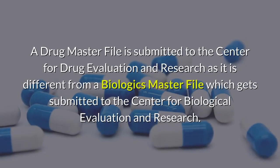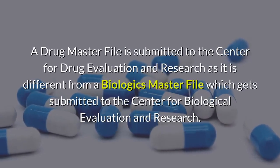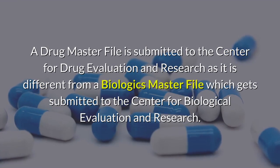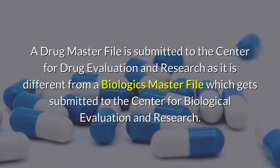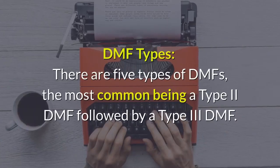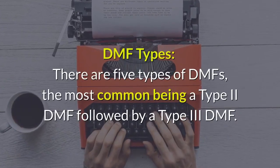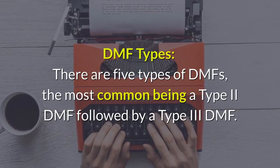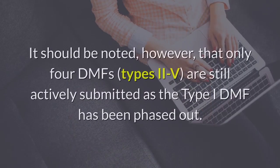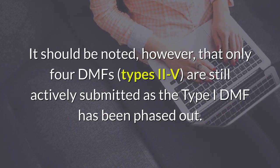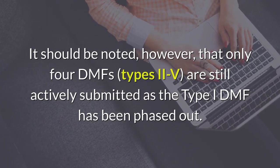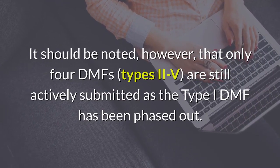A drug master file is submitted to the Center for Drug Evaluation and Research (CDER), as it is different from a biologics master file, which is submitted to the Center for Biological Evaluation and Research. There are five types of DMFs, with the most common being a Type 2 DMF, followed by a Type 3 DMF. It should be noted that only four DMF types — Types II through V — are still actively submitted, as the Type 1 DMF has been phased out.